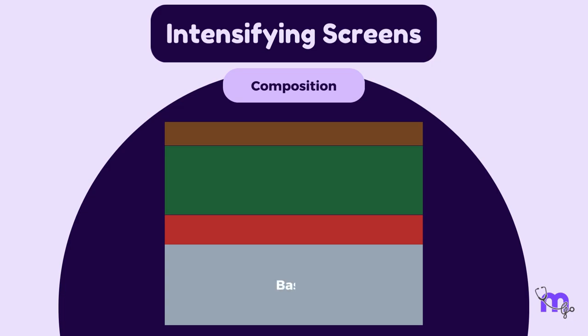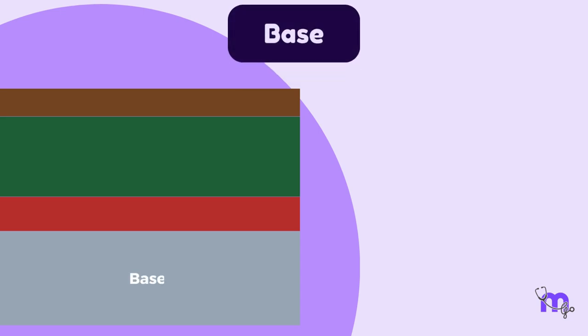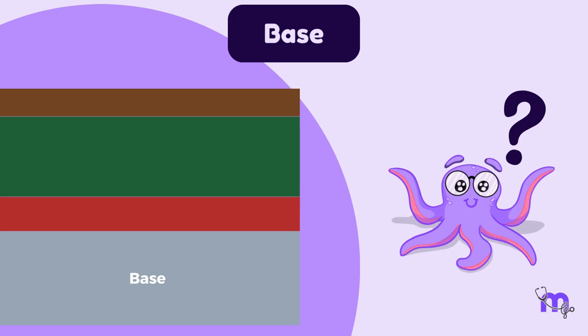Let us look at the composition of the intensifying screens. It consists of a base, reflecting layer, phosphor layer and a coat. Let us learn about the role of each layer. The first one is the base. This is made of polyester plastic material, about 0.25 mm thick. Why do you think this layer is important? Well, it's because all the other layers depend on it for mechanical support.